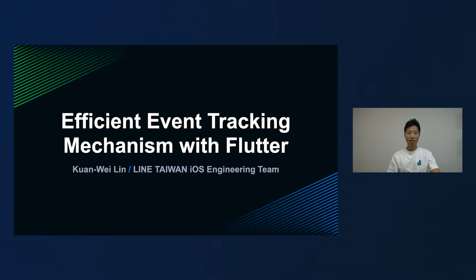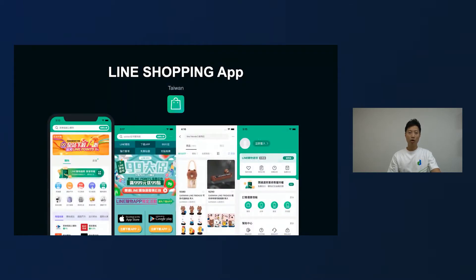I hope you like my talk today if you are planning to use Flutter to build your app. LINE Shopping is a new app that we built with Flutter and released exclusively in Taiwan to provide a more native experience for our users. It features aggregating multiple big e-commerce platforms into one single app. Users can find all kinds of products and compare prices among these platforms to get the best bargain. Our users are also rewarded with LINE points when they purchase a product in the LINE Shopping app.